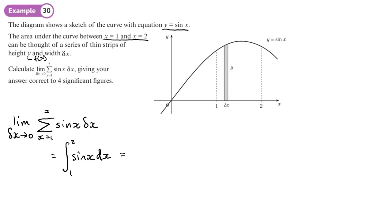So we integrate sine X, which will become negative cos X between the limits of two and one. Now, remember, whenever we have integration with trigonometry, we deal only in radians.